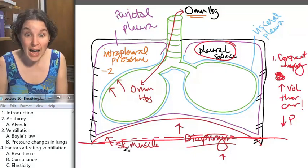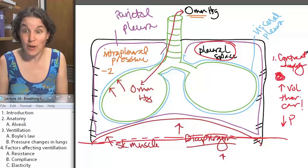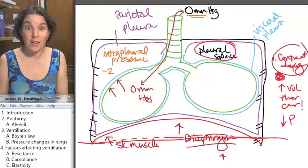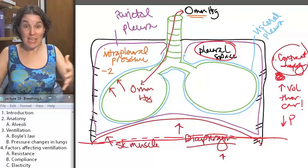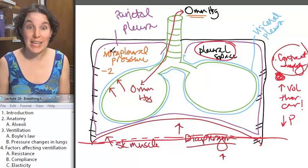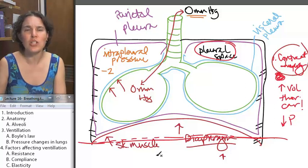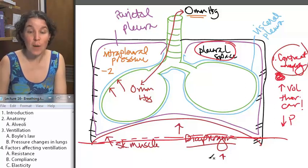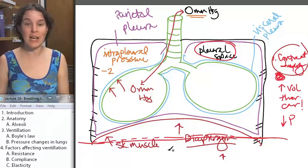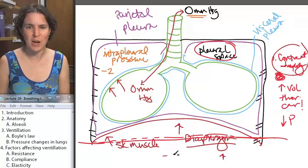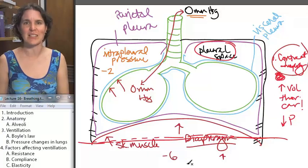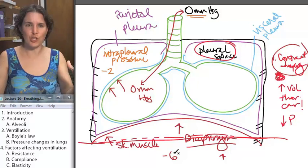Because this is a higher pressure zone than this intrapleural space, the molecules are going to push and try to get into that space because it's a low pressure zone that keeps your lung inflated. If I contract my diaphragm, all of a sudden I've increased the volume of my intrapleural space, and I've decreased my pressure even more.